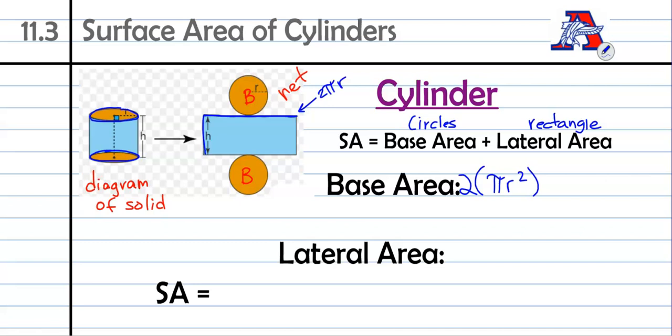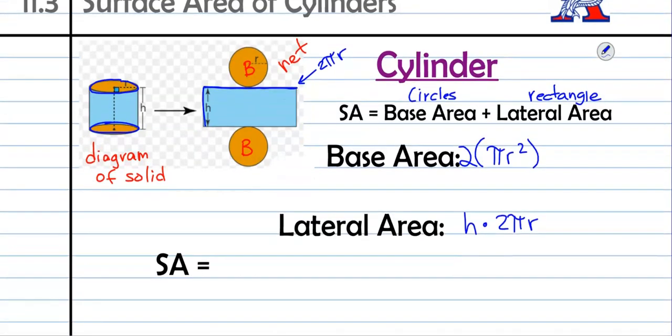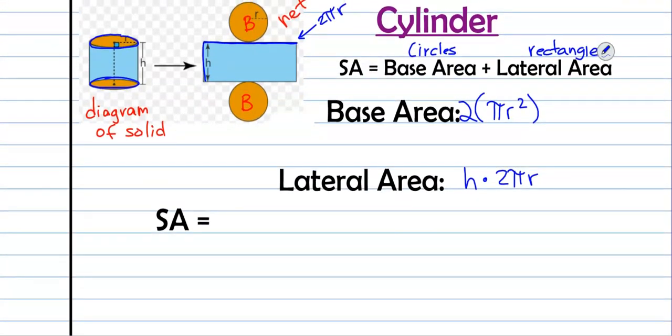So this distance here is our 2 pi r. When we're finding the lateral area, we're going to do height times 2 pi r. The height of our label times the circumference of the circle. So we can put all of this together. When we're finding the surface area, we have those two circles. So we have 2 times pi r squared plus that rectangle, and that rectangle was height times 2 pi r. We can just keep using that formula as we find surface area of cylinders.